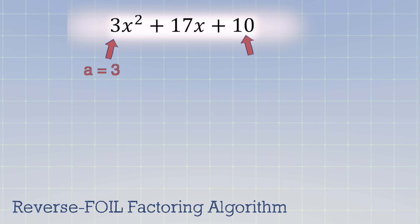You take that leading coefficient, in this example it's 3, and you multiply by the constant. Here we have 10. So 3 times 10 is 30, and you go ahead and write it down.